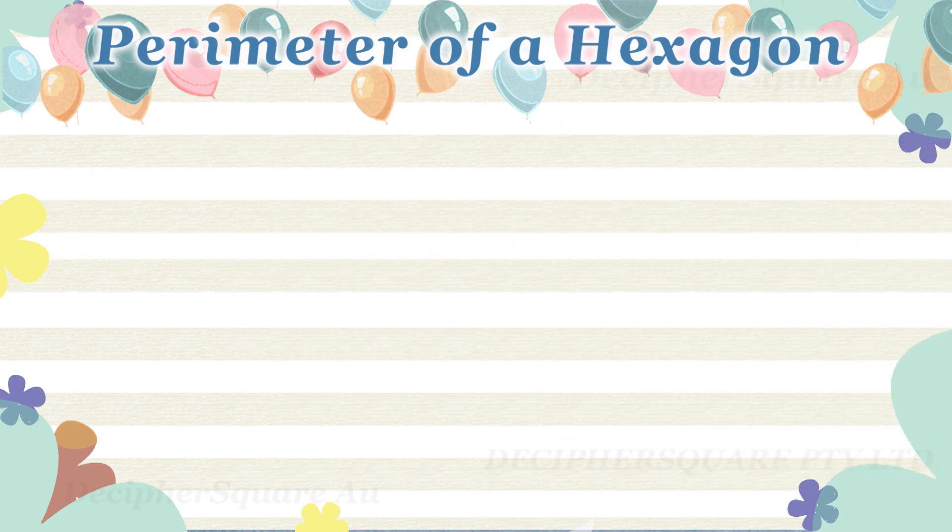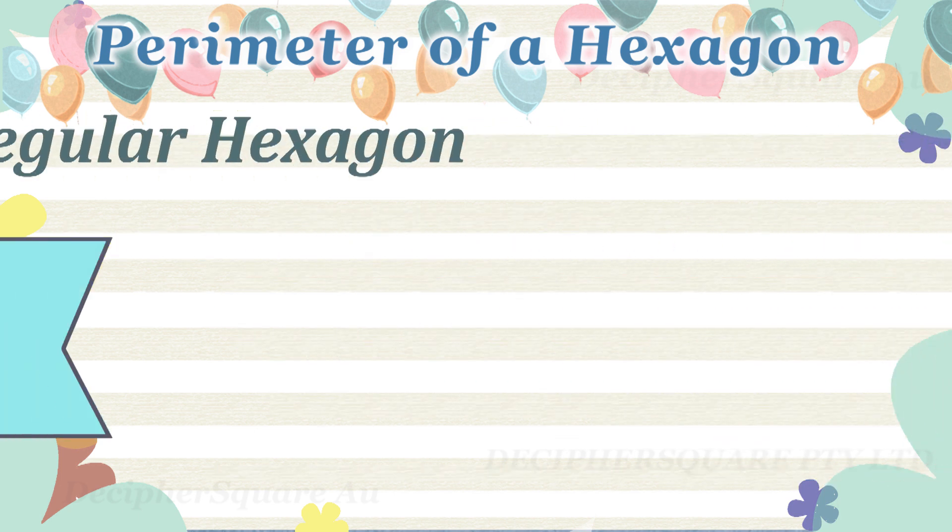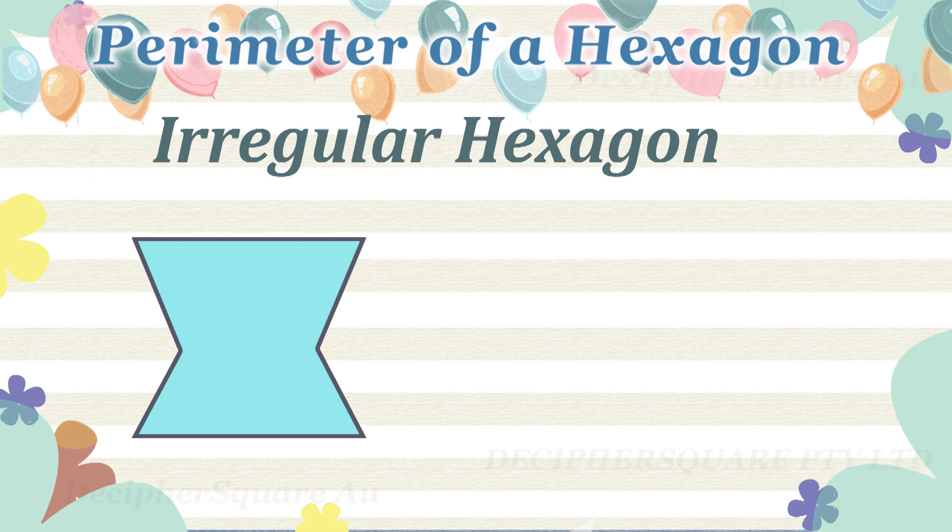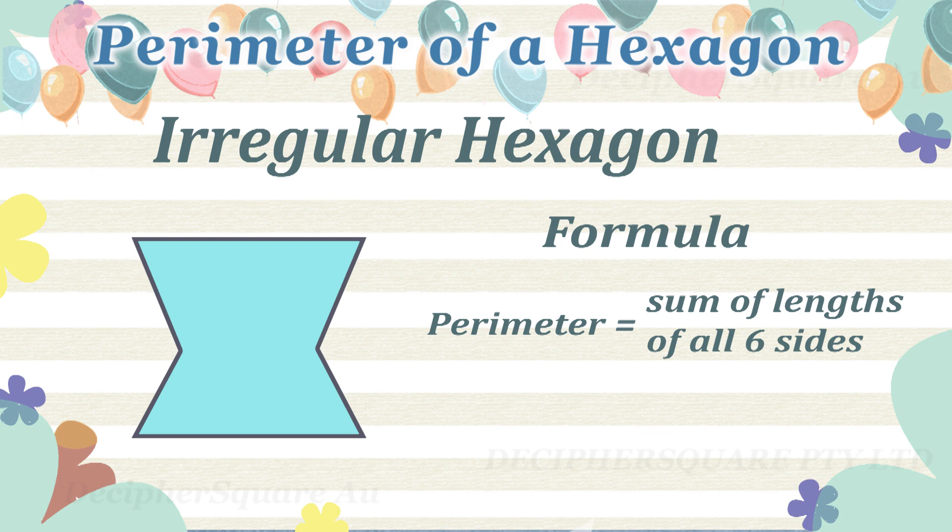In the case of an irregular hexagon, as the sides are not of equal length, the perimeter is simply the sum of the lengths of all six sides of the hexagon.